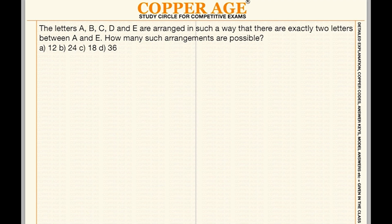The letters A, B, C, D, and E are arranged in such a way that there are exactly two letters between A and E.